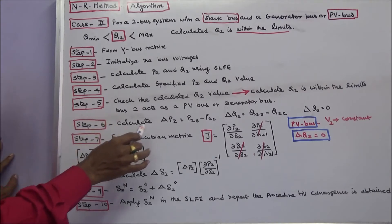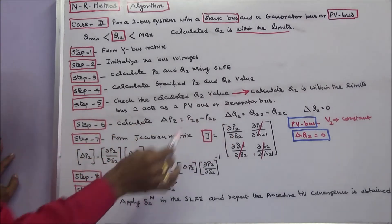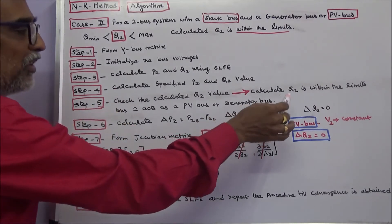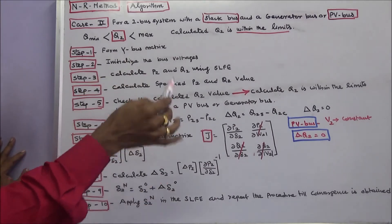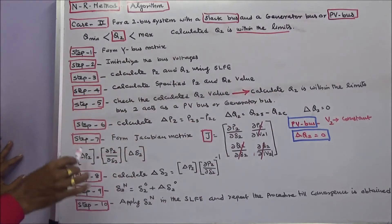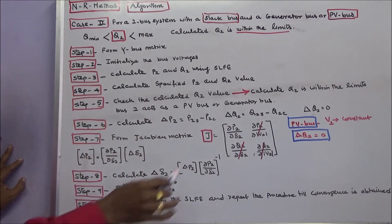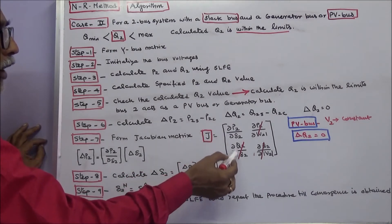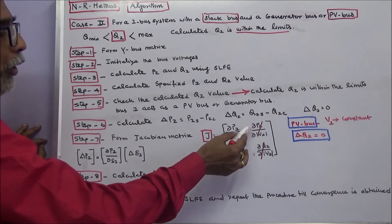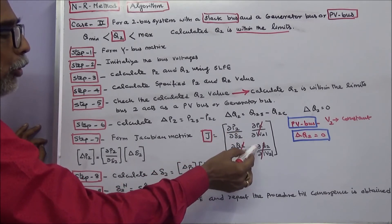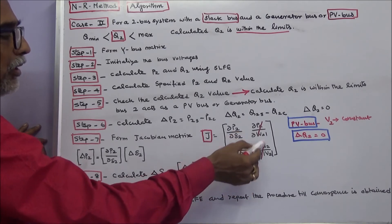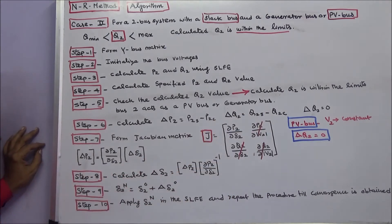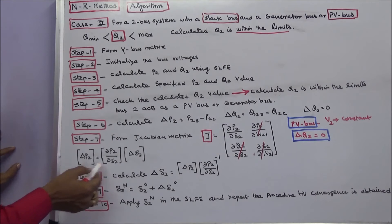Step 6: calculate change in real power and change in reactive power. Since bus 2 is a generator bus, the change in reactive power is zero, and V2 is constant. Step 7: form the Jacobian matrix — it is a 2×2 matrix with elements ∂P2/∂δ2, ∂Q2/∂δ2, ∂P2/∂|V2|, and ∂Q2/∂|V2|. The terms involving ΔQ2 and ΔV2 are zero because ΔQ2 = 0 and V2 is constant. Therefore, this gives the reduced Jacobian matrix.